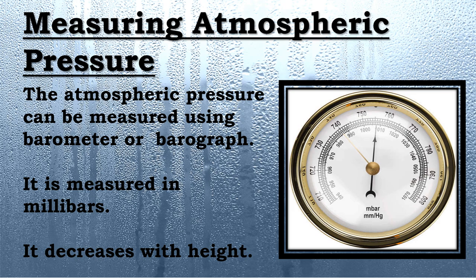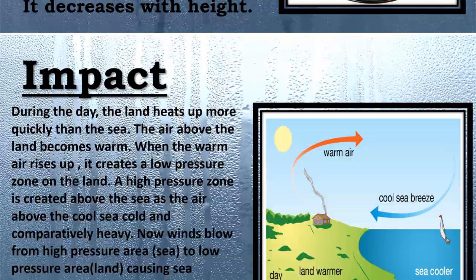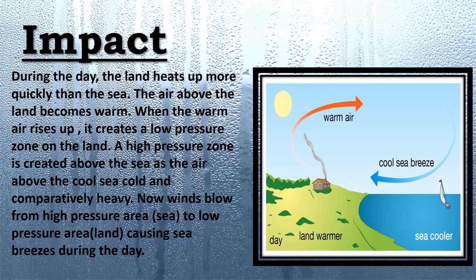Look at the screen carefully. There is a picture showing how during the daytime a pressure zone is created. During the day, land heats up more quickly because of the sun, and because of the heating of the land, the warm air rises up and creates a low pressure zone on the land. Above the sea during the day, a high pressure zone is created because the air above the sea is cool and comparatively heavy. When the winds blow from the high pressure area — the sea — to the low pressure area — the land — it causes a sea breeze during the day.